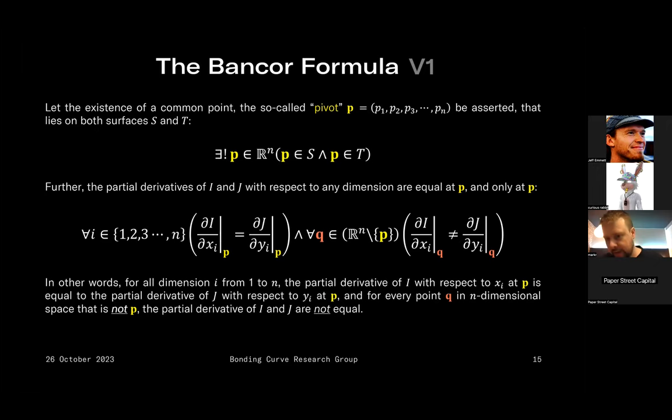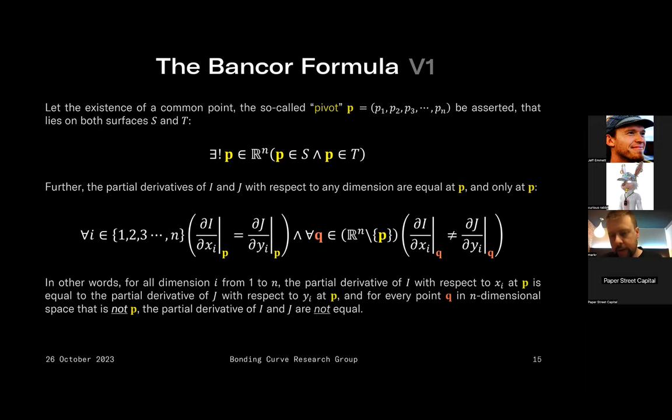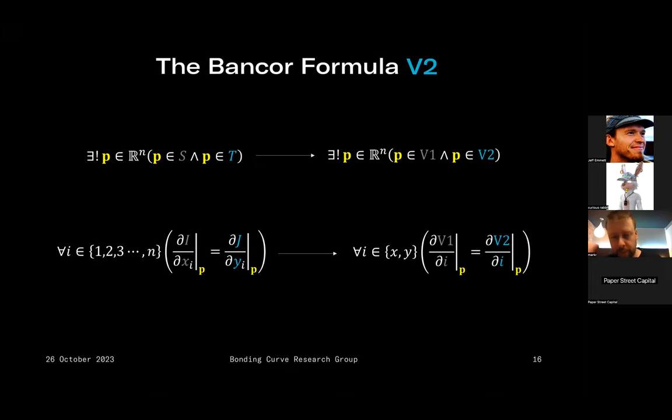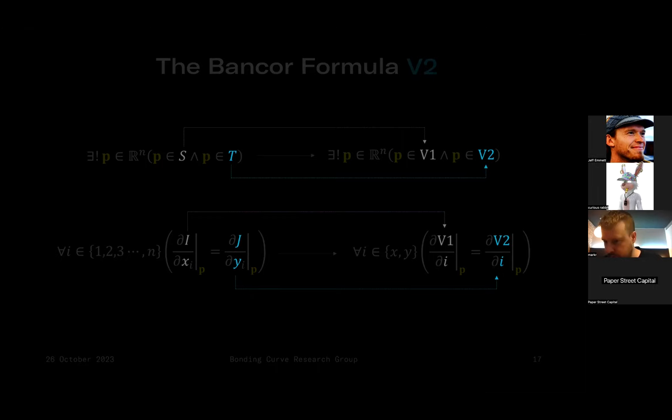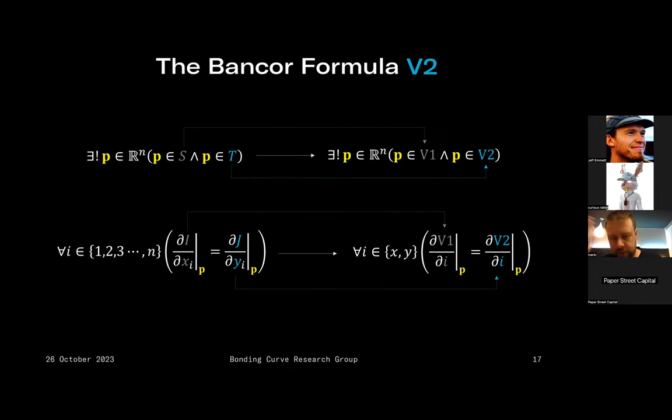Using this pivot point we can interrogate the problems from the last lecture in a slightly different light. I realize it's a little more cerebral this time, but it's a much more direct way to attack the problem. I'm now going to swap surface labels S and T for V1 and V2 just for clarity — a quick naming convention change that doesn't change the meaning of the expressions at all.